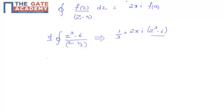So this would give us 1/3 times 2πi times [(1/3)^3 - 6]. Now if we solve this, we get 2π/81 - 4πi.